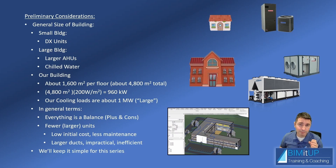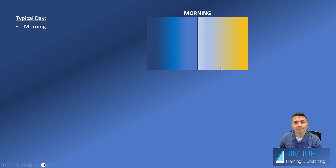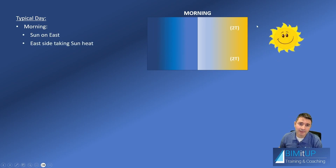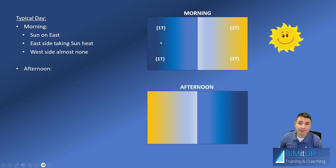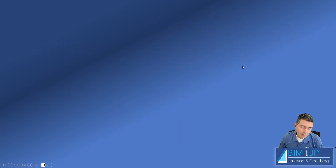For this series we'll keep it as simple as possible to illustrate the Revit concepts. Consider a typical day: in the morning the sun is on the east side, so the east side of the building is taking a lot of solar heat while the west side is not. In the afternoon, things flip — the sun is on the west, the west side takes the solar heat, and the east side takes almost none.